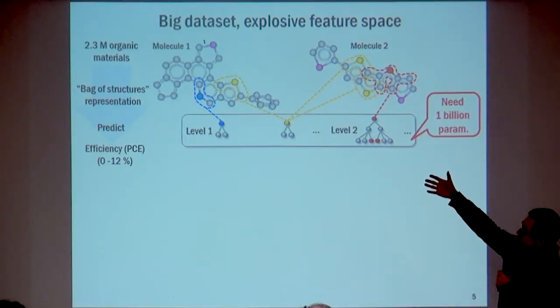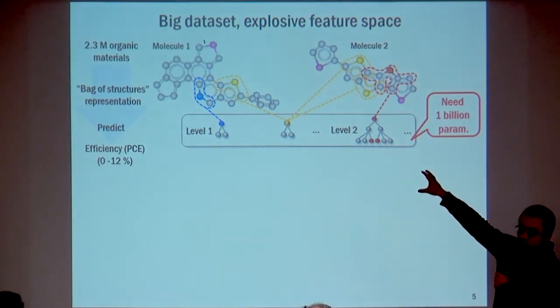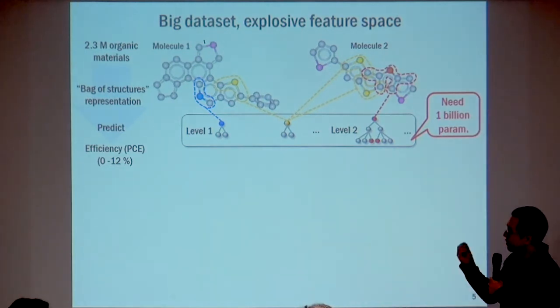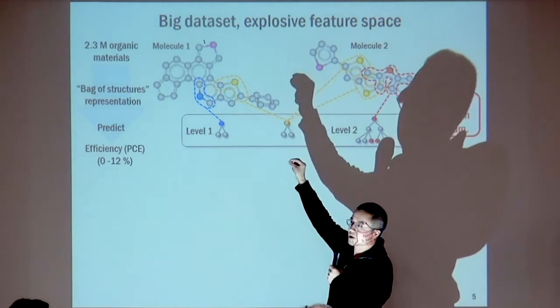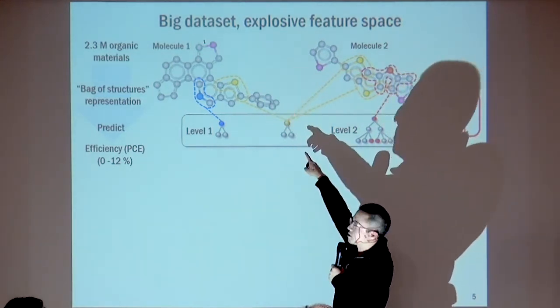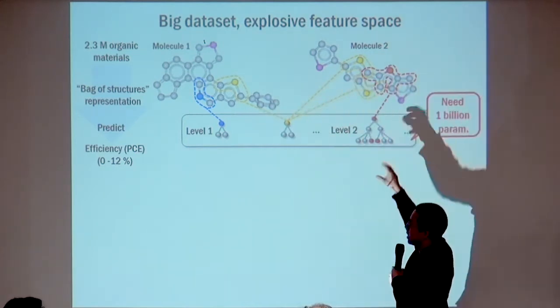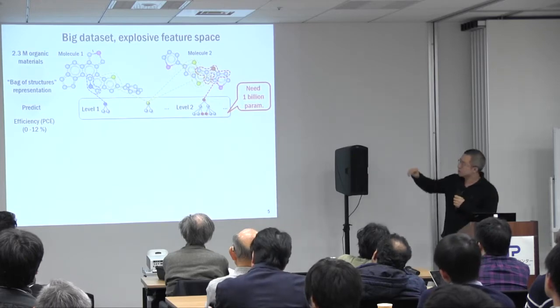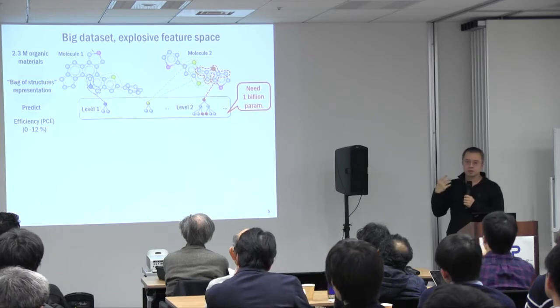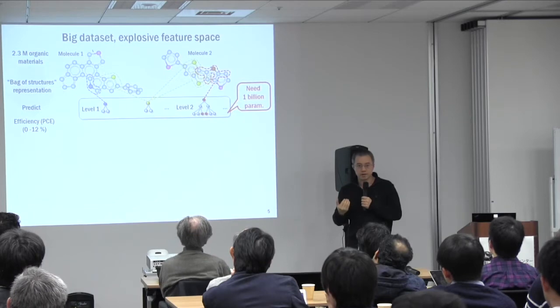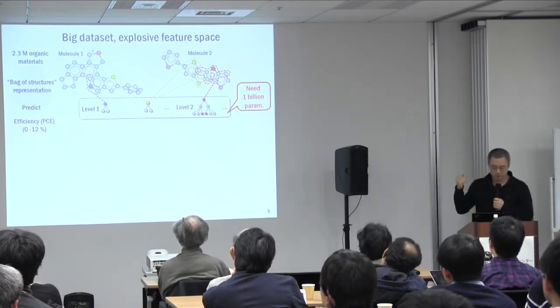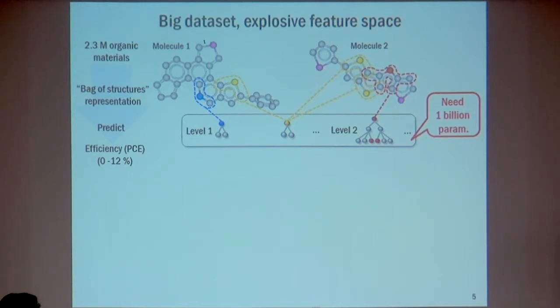This type of problem has been treated before in the kernel literature. The simplest approach is to hand-design some features — small substructures. For example, for a molecular structure classifier, you define many small substructures (e.g., a blue atom connected to two gray atoms, a yellow atom with a gray neighbor) and count the number of such substructures in your data point — like a bag of substructures. For larger datasets with more complicated molecular structures, you need billions of such substructures, resulting in a very high-dimensional model.